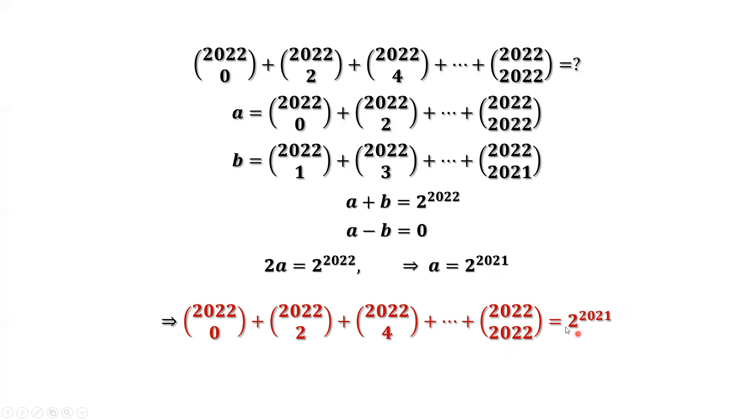By the way, from this proof, we find a and b are symmetrical in this question. We also can switch the order: b minus a equals 0. That means the answer b is also the same as 2 to the power 2021.